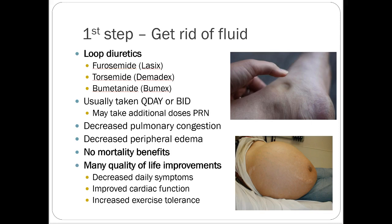Most patients will be on a scheduled loop diuretic regimen. Very mild cases might take Lasix only as needed if they gain a certain number of pounds, but the most common scenario is a low daily dose — like 10 to 20 mg of Lasix. There are no mortality benefits to loop diuretics; they just improve quality of life, get rid of fluid, and allow your other drugs to do their job. But from a quality-of-life perspective, they have a huge impact.